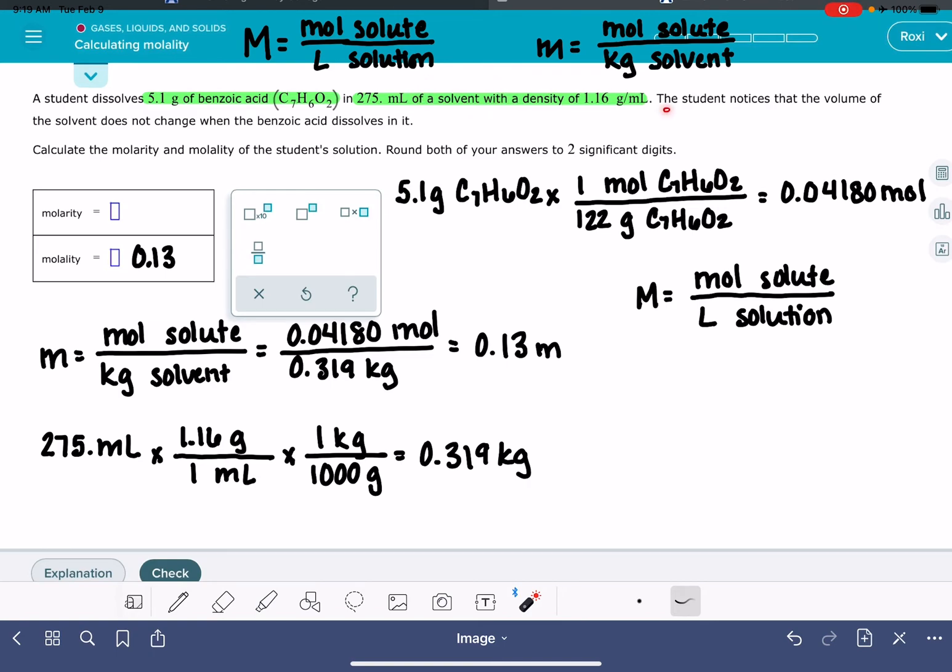However, this problem tells us that the student notices that the volume of the solvent doesn't change when the benzoic acid dissolves in it. So that's its way of letting us know that in terms of the volume of the solution, we can assume that the volume of the benzoic acid isn't having any kind of role or playing any part in contributing to the volume of the solution.